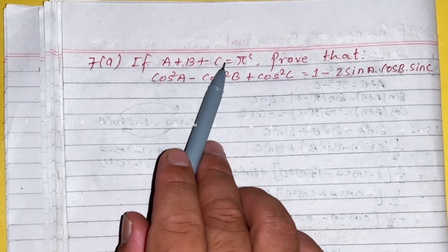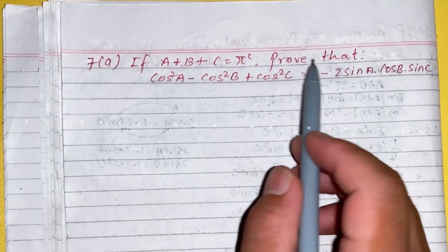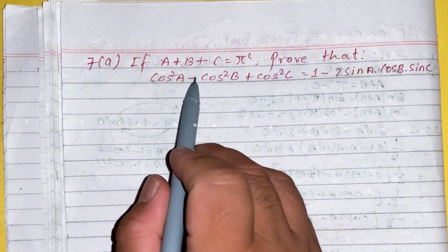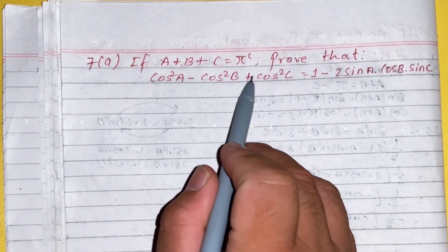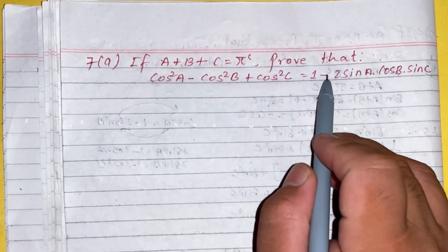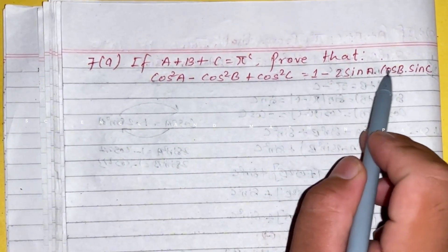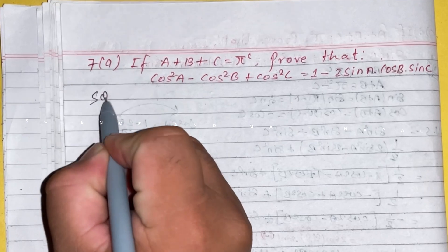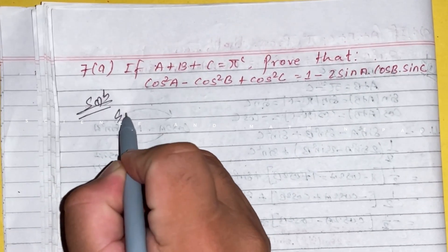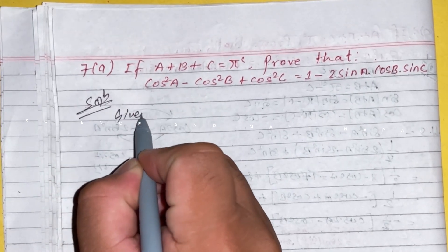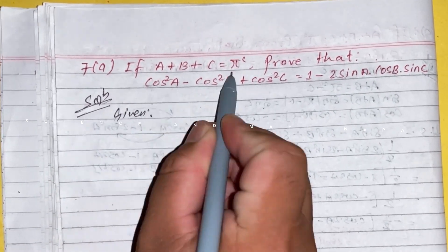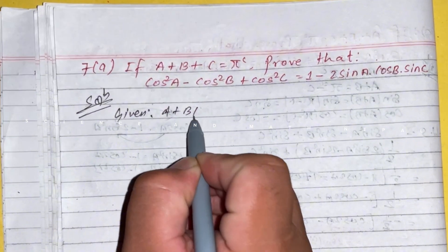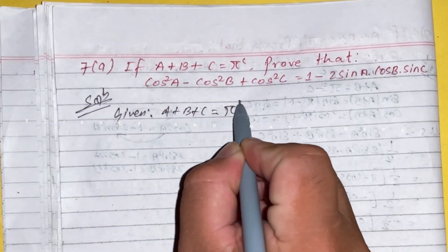If a plus b plus c equals pi radian, prove that cos square a minus cos square b plus cos square c equals 1 minus 2 sin a cos b sin c. Solution: given a plus b plus c equals pi radian.